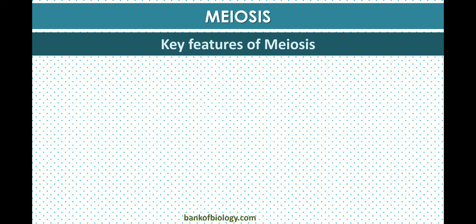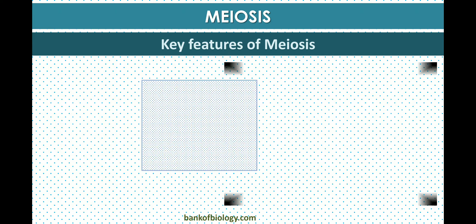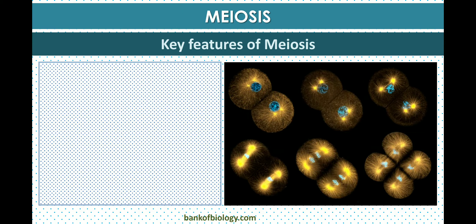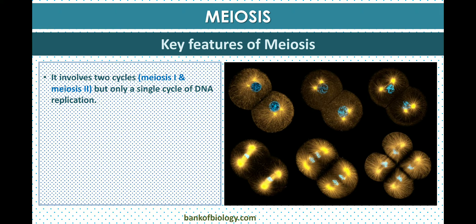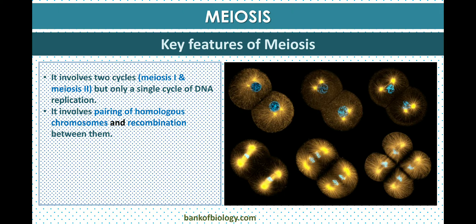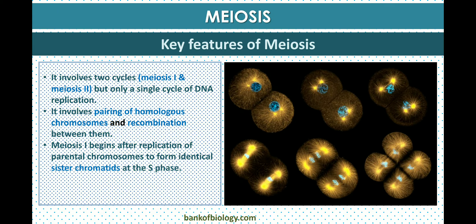During meiosis, there are key features to note. First, it involves two cycles — meiosis one and meiosis two — but only a single cycle of DNA replication. It involves pairing of homologous chromosomes and recombination between them. Homologous chromosomes are morphologically and genetically identical to each other.